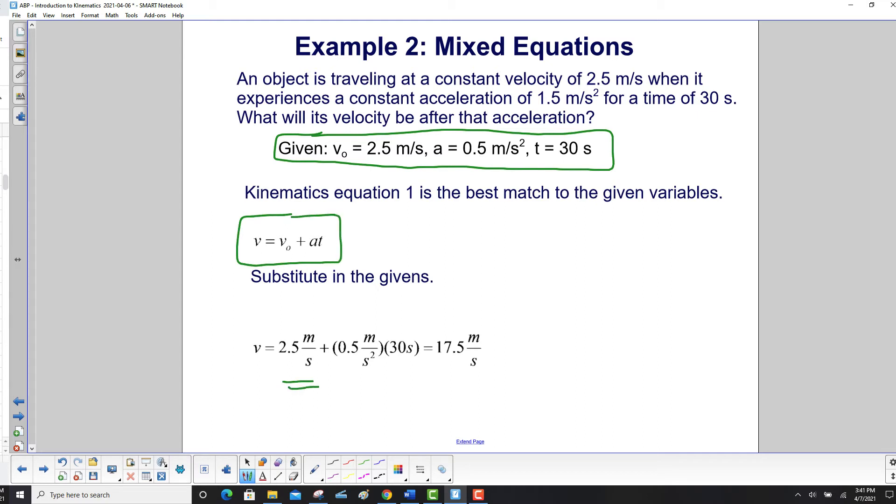So v is v zero plus a times t. Carry out the math, we get 17.5 meters per second.